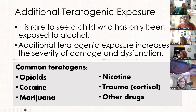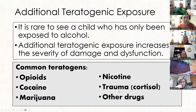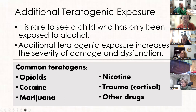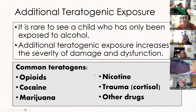Teratogens is a clinical term that means anything harmful that can be exposed to a pregnancy. One teratogen we don't talk about enough is cortisol exposure from trauma. Many of the kids in our centers have gone through enormous amounts of trauma, and so have their biological parents. If a mother doesn't know where she's going to sleep or how to feed her children, extended secretion of cortisol can cause extensive damage — and when paired with alcohol, it causes even more.